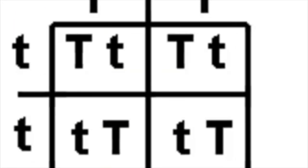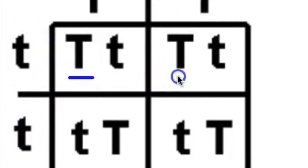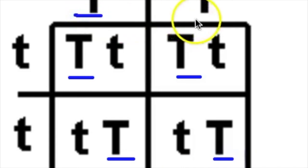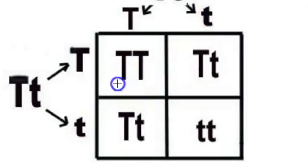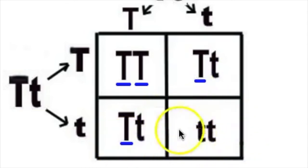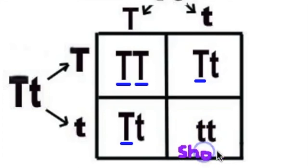In this example, we are crossing a double capital tall plant with a double lowercase short plant. Each parent gives one factor to the F1 generation; therefore all of the F1 generation will have one capital and one lowercase t and will be tall plants. When the F1 generation is allowed to self-pollinate, each parent will give one factor — capital or lowercase t — to the F2 generation. So the F2 generation offspring will have four possible combinations: capital capital, capital lowercase, lowercase capital, or lowercase lowercase. According to the laws of probability, 25% of offspring will be lowercase lowercase, so they will appear short, and 75% will have at least one capital T factor and so the plants will be tall.